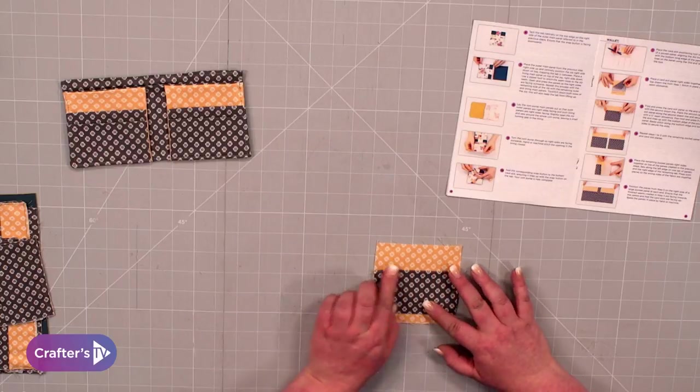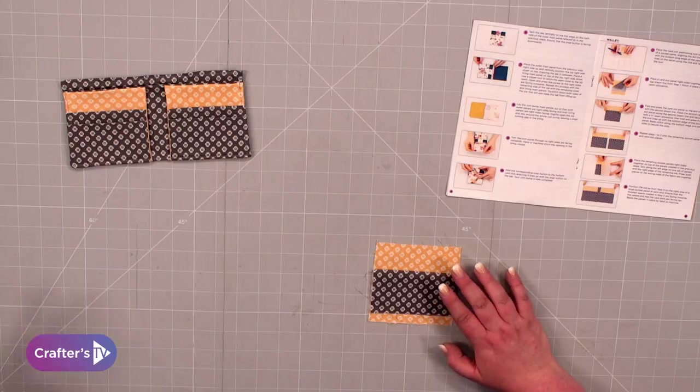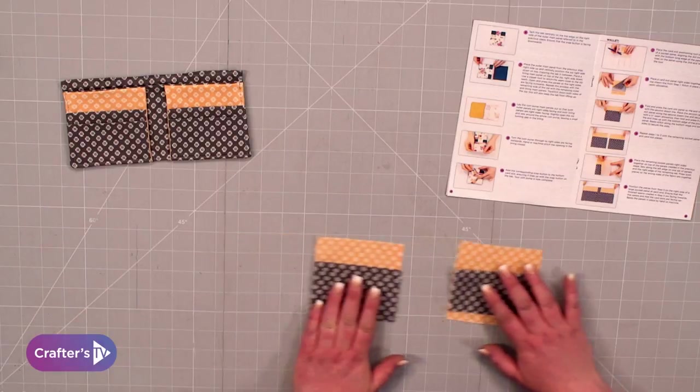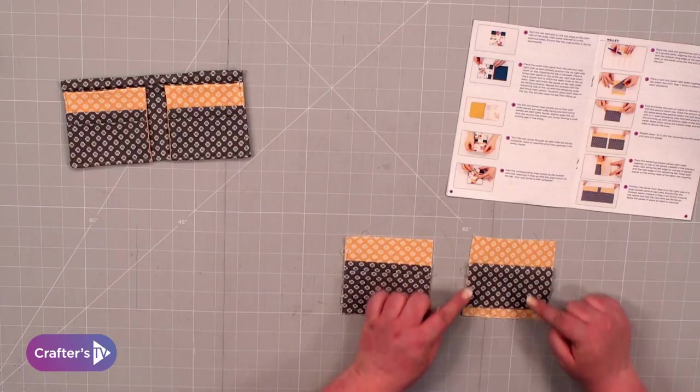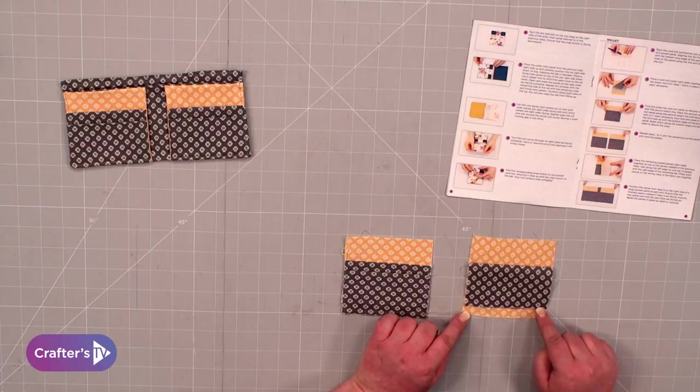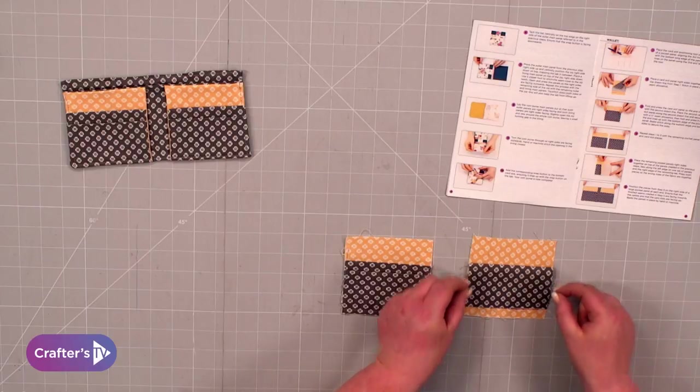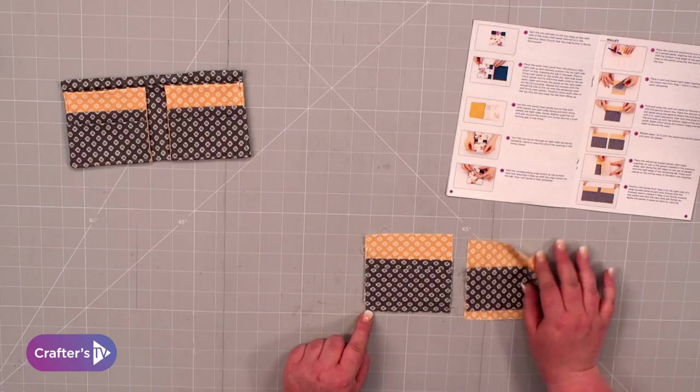Give that a little finger press. With the second one, you're going to line it up with the second line, stitch your quarter inch seam again, and then bring it down so it's flush with the bottom.